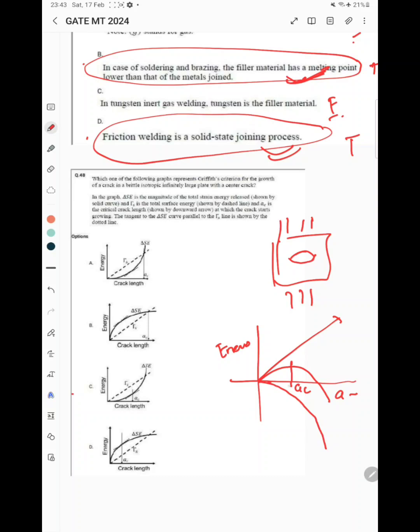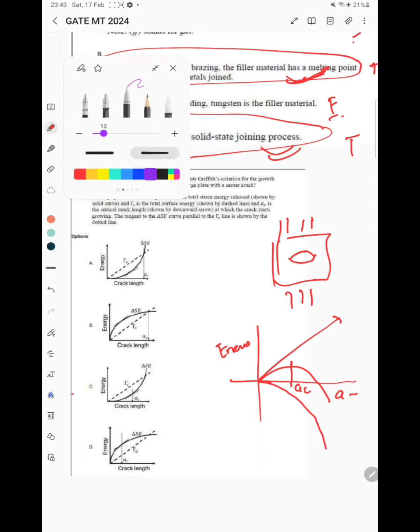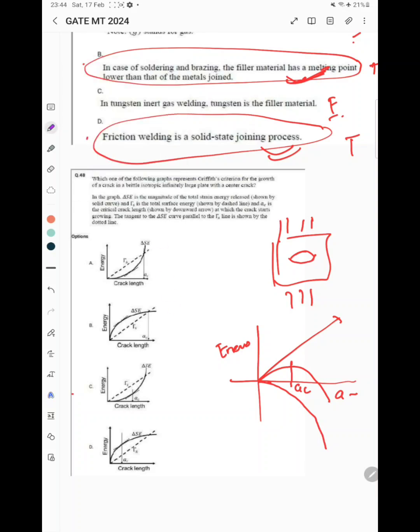When you use this magnitude, the curve will be like this. Now you can see option C, this one is the correct option. The only trick is that they have given the magnitude of strain energy, so you have to reverse this particular curve.